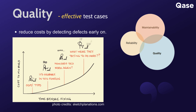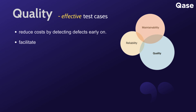Thoroughly tested software is less prone to failures and errors in a production environment. As software evolves, it's crucial to ensure that existing functionalities remain intact. Test cases act as a baseline for regression testing, providing reassurance that new changes do not disrupt previously working parts of the application.